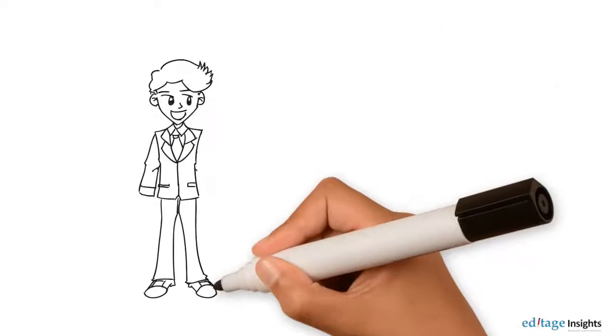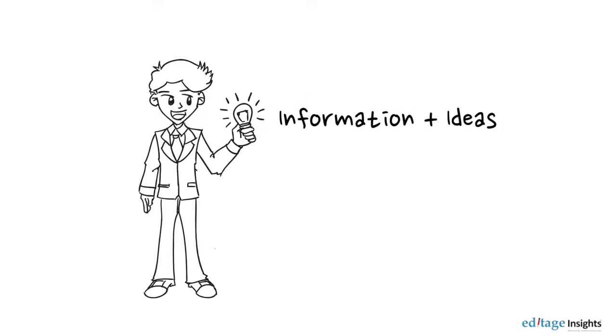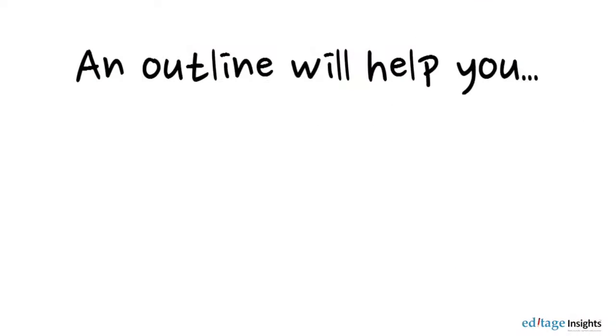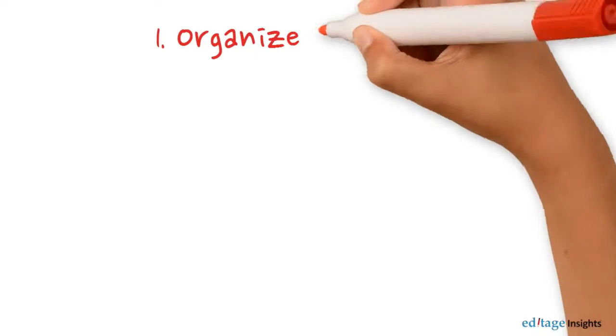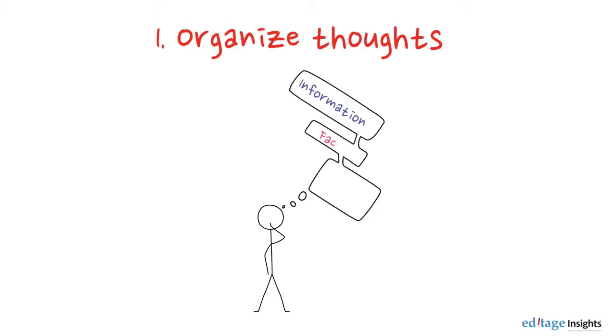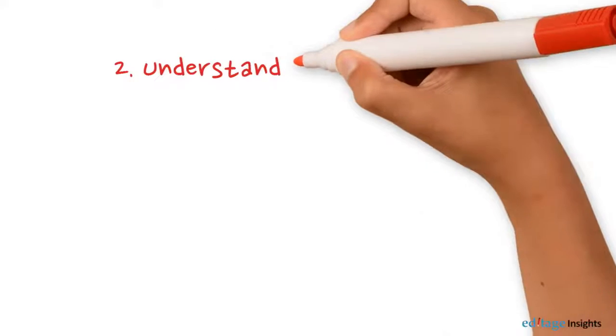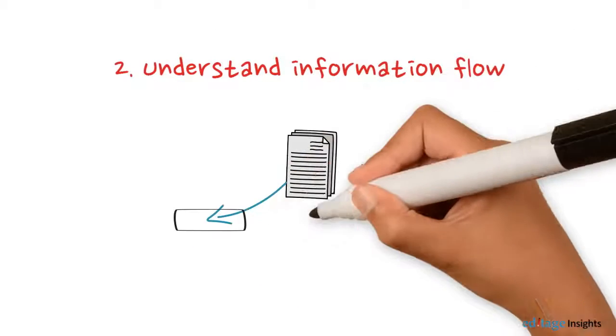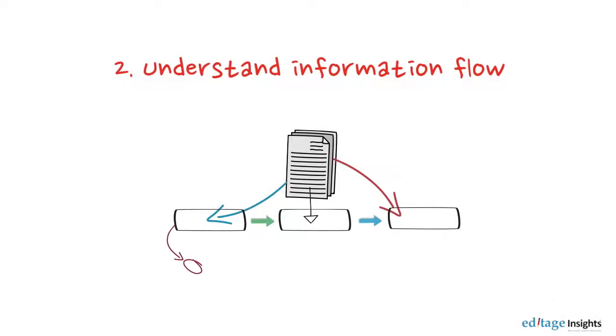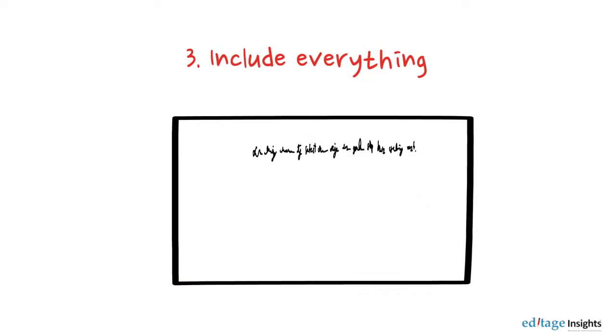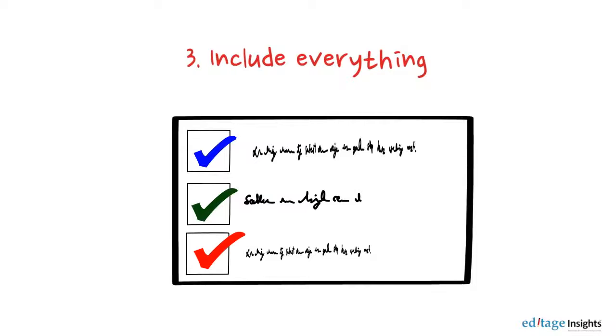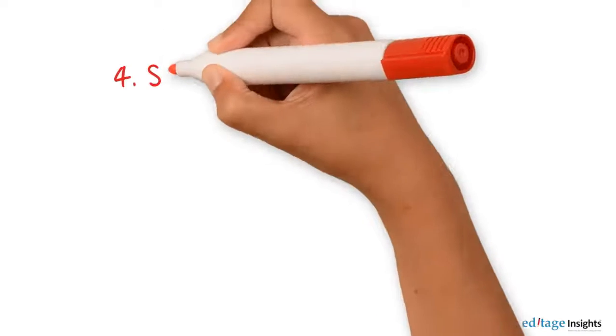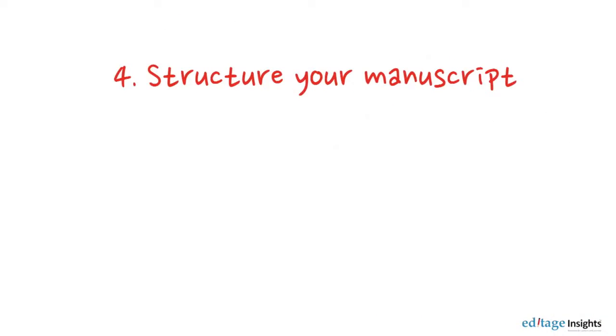When you conduct research you collect a lot of information and ideas. A research outline can help you organize your thoughts better, understand the flow and levels of information in your research, ensure that you don't miss anything while writing, and prepare a well-structured, neatly organized manuscript.